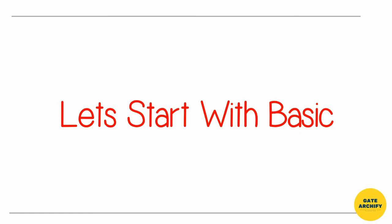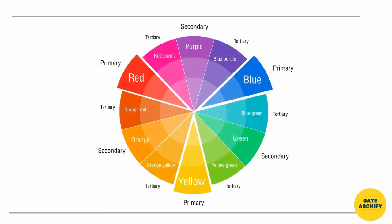Let's start with the basics. These three colors are primary colors: red, blue, and yellow. By mixing two primary colors, we get secondary colors—orange, purple, and green. By mixing primary and secondary colors, we get tertiary colors.